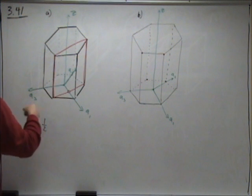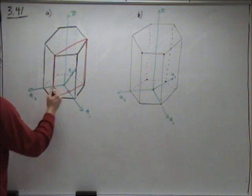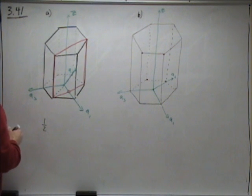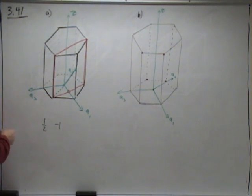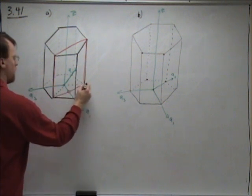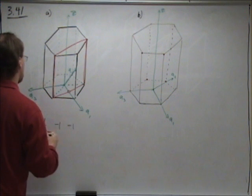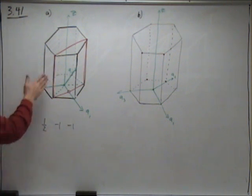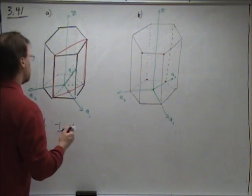It crosses A2 back 1, so it is A negative 1 for A2. It crosses A3 back 1, so this is A negative 1 for A3. And it is parallel to the Z. It never crosses the Z axis. So, infinity.